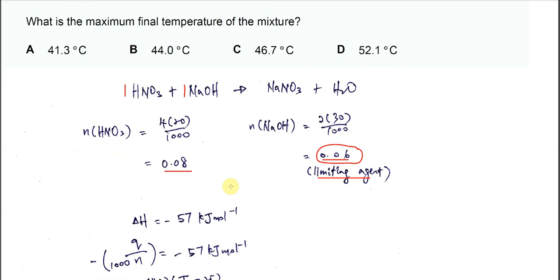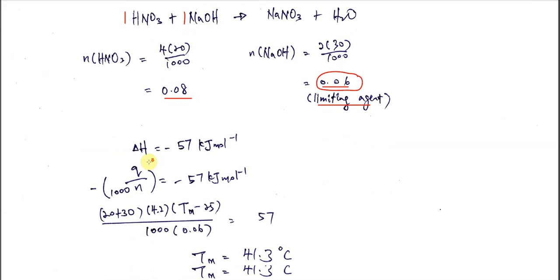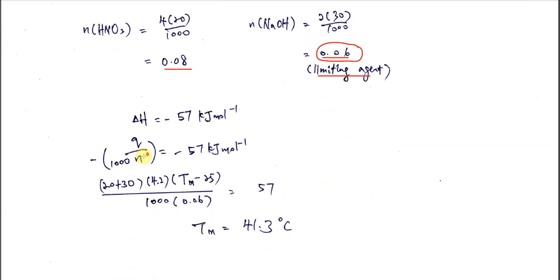Okay, so we start with this because delta H that given is negative 57 kilojoules per mole. We know that in order to calculate the delta H, we must calculate the heat, means the Q, and we use the moles of limiting agent. Q over 1000, we get the kilojoules per mole. This one is the mole, so we get kilojoules per mole.